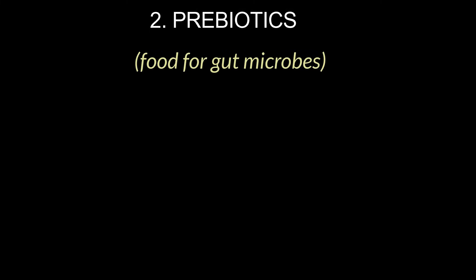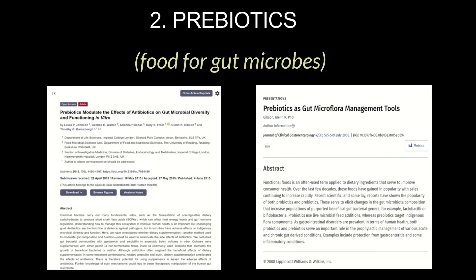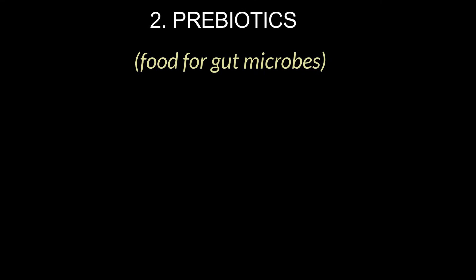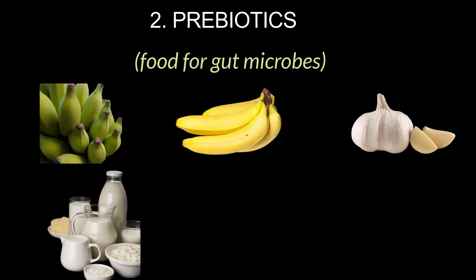Number two would be to focus on prebiotic foods. Prebiotics serve as food for our gut microbes, and research has shown that a diet rich in prebiotics can significantly help in nourishing and promoting the growth and diversity of good strains of gut microbes. Prebiotics are basically a kind of dietary fiber, but not all dietary fiber can be called prebiotics. Prebiotic-rich foods include bananas in both ripe and raw form, garlic, milk and milk products, legumes, and sweet potatoes. Cooked and cooled rice as well as cooked and cooled potatoes contain resistant starch, which also serves as prebiotic food for our gut microbes.